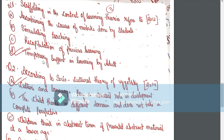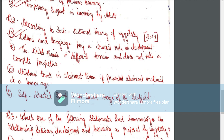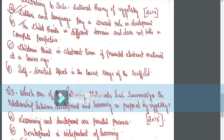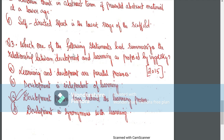According to the sociocultural theory of Vygotsky, culture and language play a crucial role in development. The child thinks in different domains. Children think in abstract terms if presented with abstract material. Self-directed speech is the lowest stage of scaffolding.